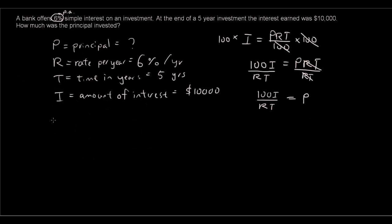So once we have the equation rearranged so that the principle is the subject, we can then substitute in the values for I, R and T. So 100 times I which is 10,000 divided by the rate which is 6%, T which is 5 years. So put all that into the formula.